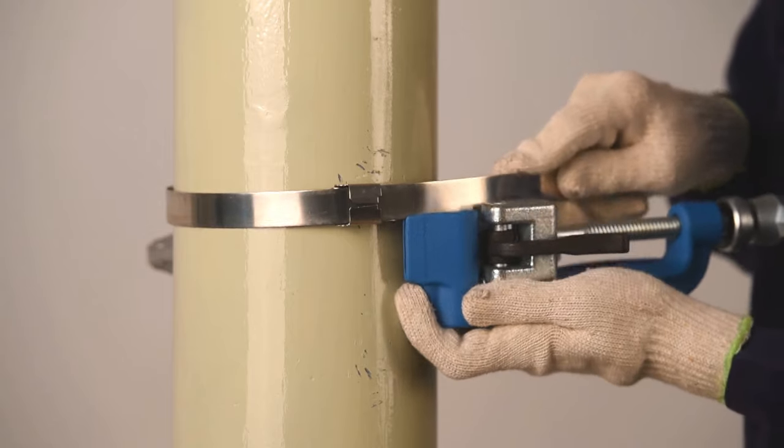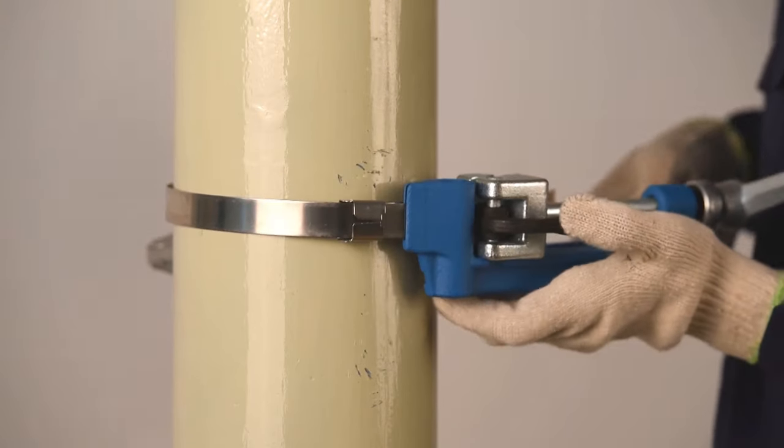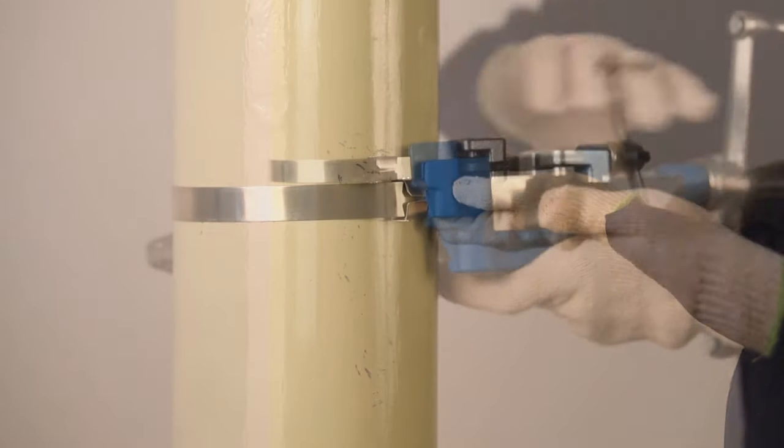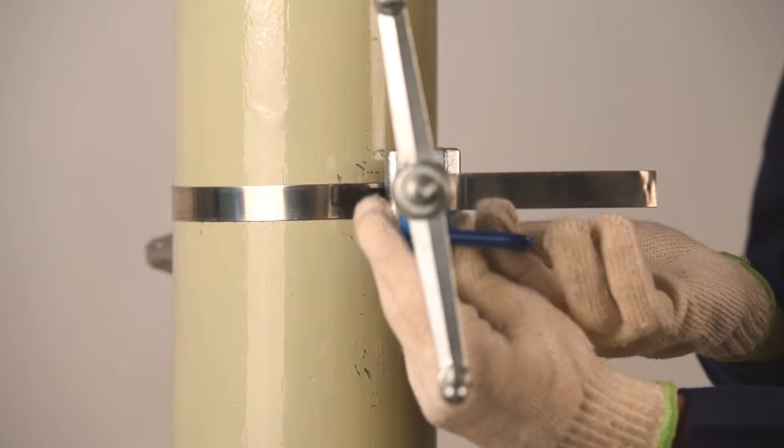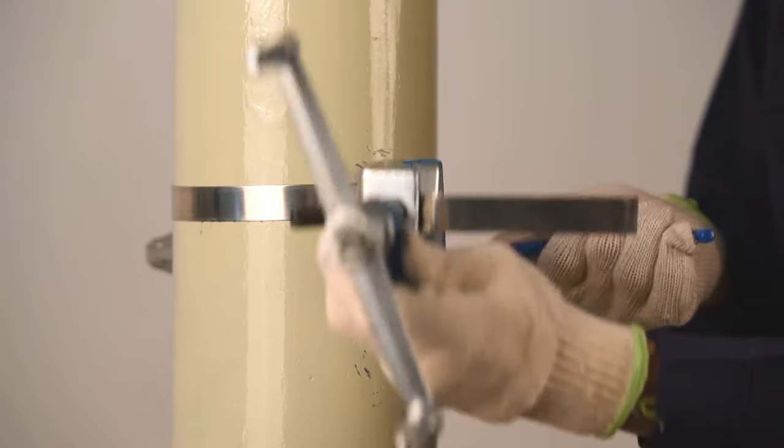Locate the other open end of the strap into the strap binding tool and lock the tool. Tension the strap by rotating the handle of the strap binding tool. Cut the additional strap using the cutting edge of the tensioning tool and reverse fold the end of it.